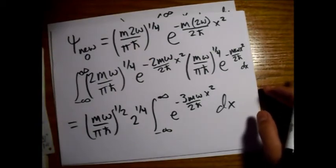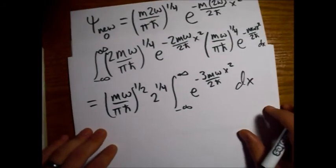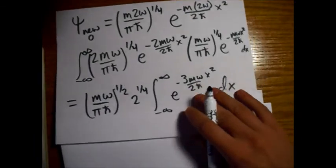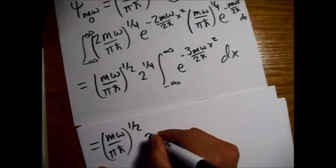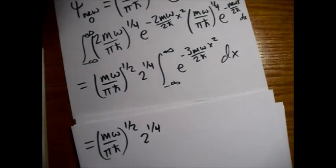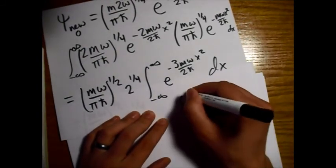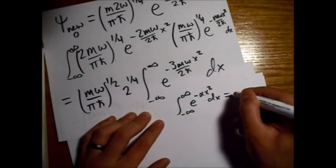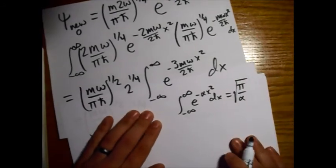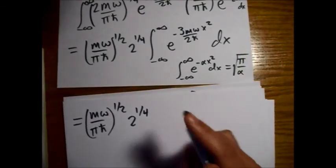And then we have our integral, which, if we add these two together, we get e to the minus 3 m omega x square over 2 h bar dx. And at this point, I always like to look up the Gaussian integrals because I never remember them. But if you can remember them, you can save yourself a lot of time. But let's go ahead and skip down to here.